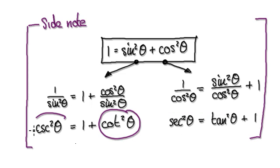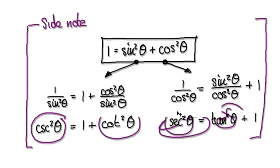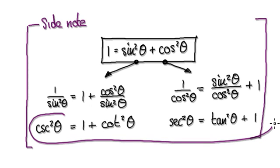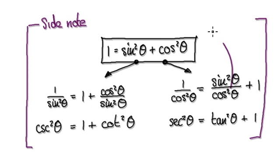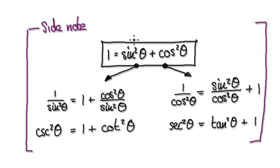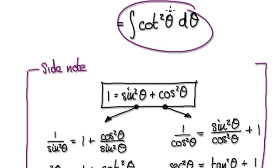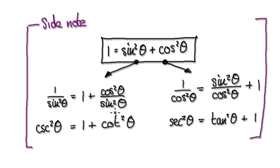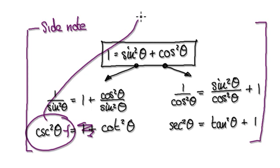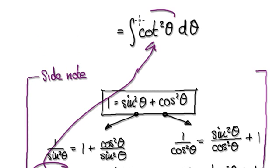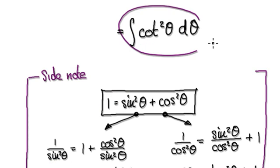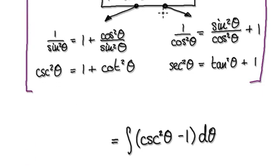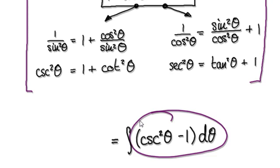If you have cot squared you can jump to this form, and if you have this you can jump back. We are currently at cot squared. Cot² equals cosecant² minus 1 — so we take away one from both sides and substitute this into the integral. This thing here then becomes this new expression.